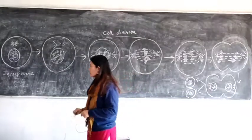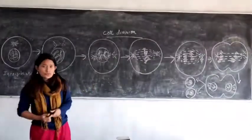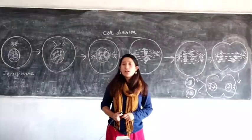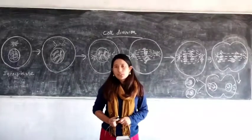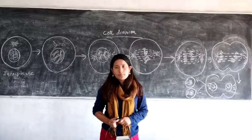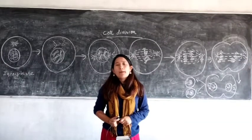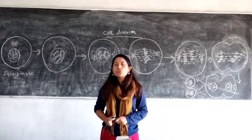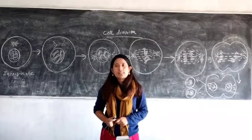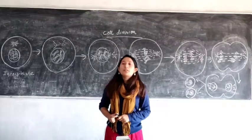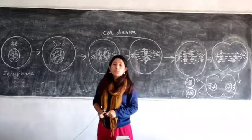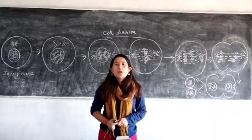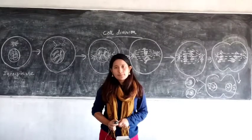There are two types of cell division: mitosis and meiosis. Mitosis occurs in body cells or somatic cells. Meiosis occurs in reproductive cells of reproductive organs.